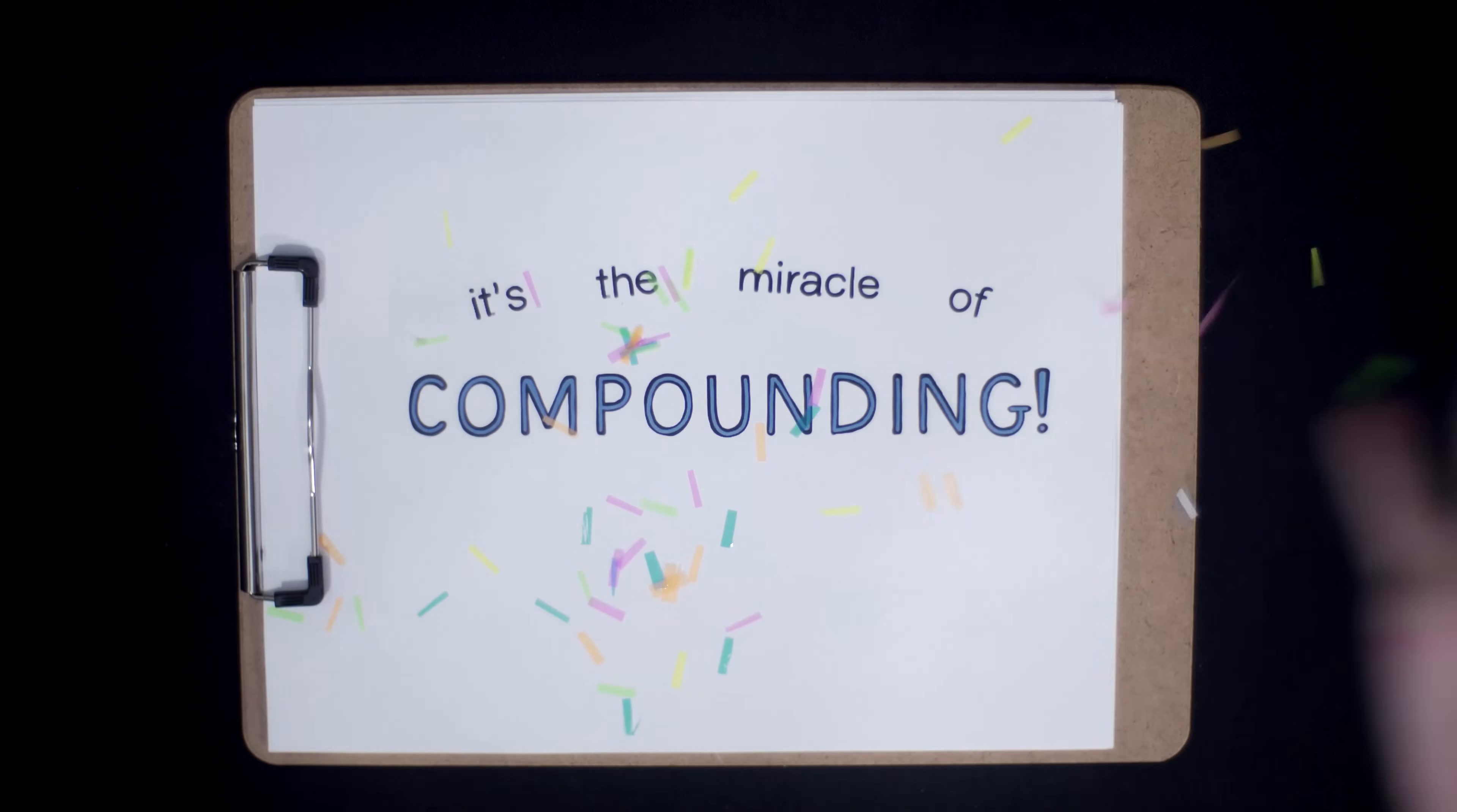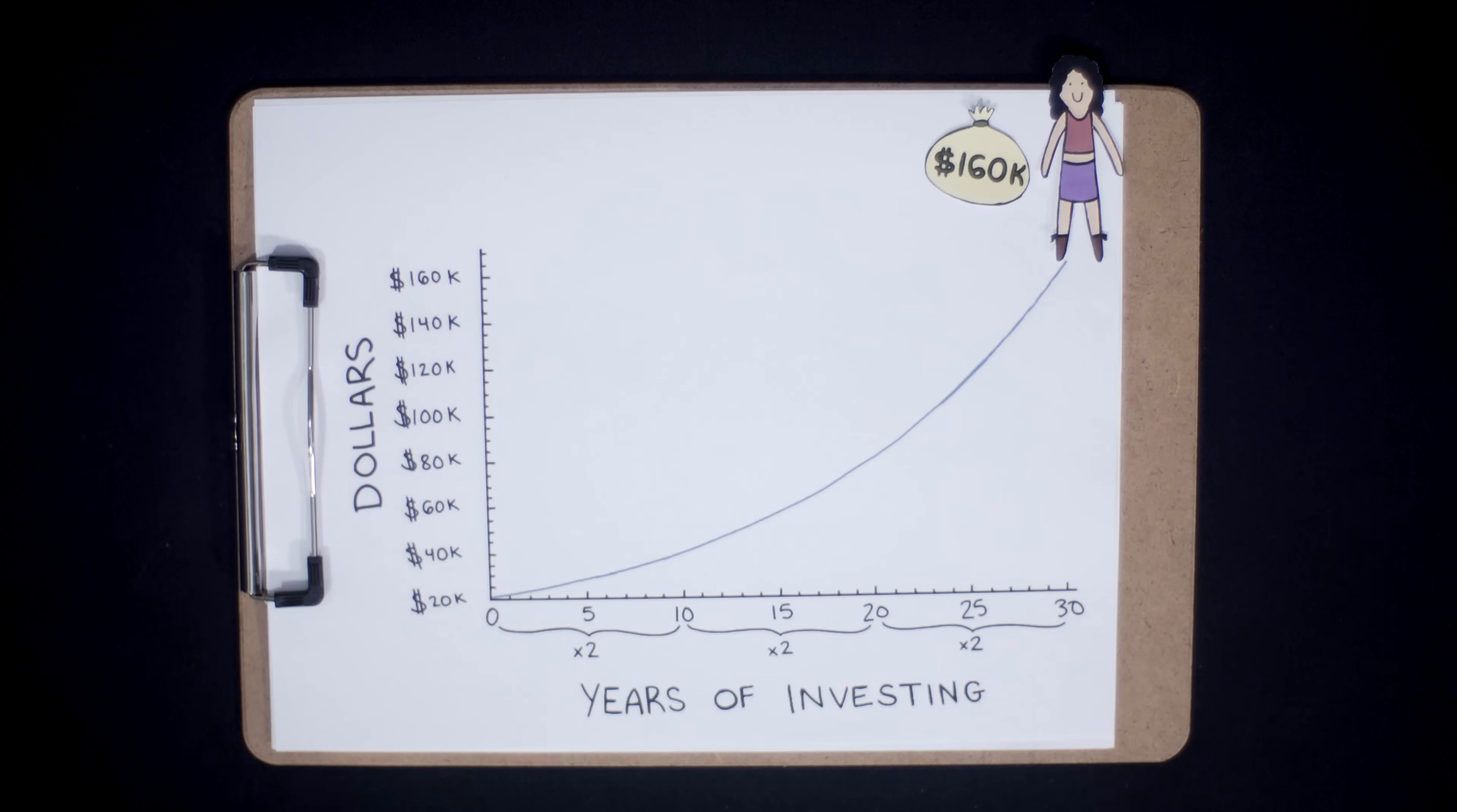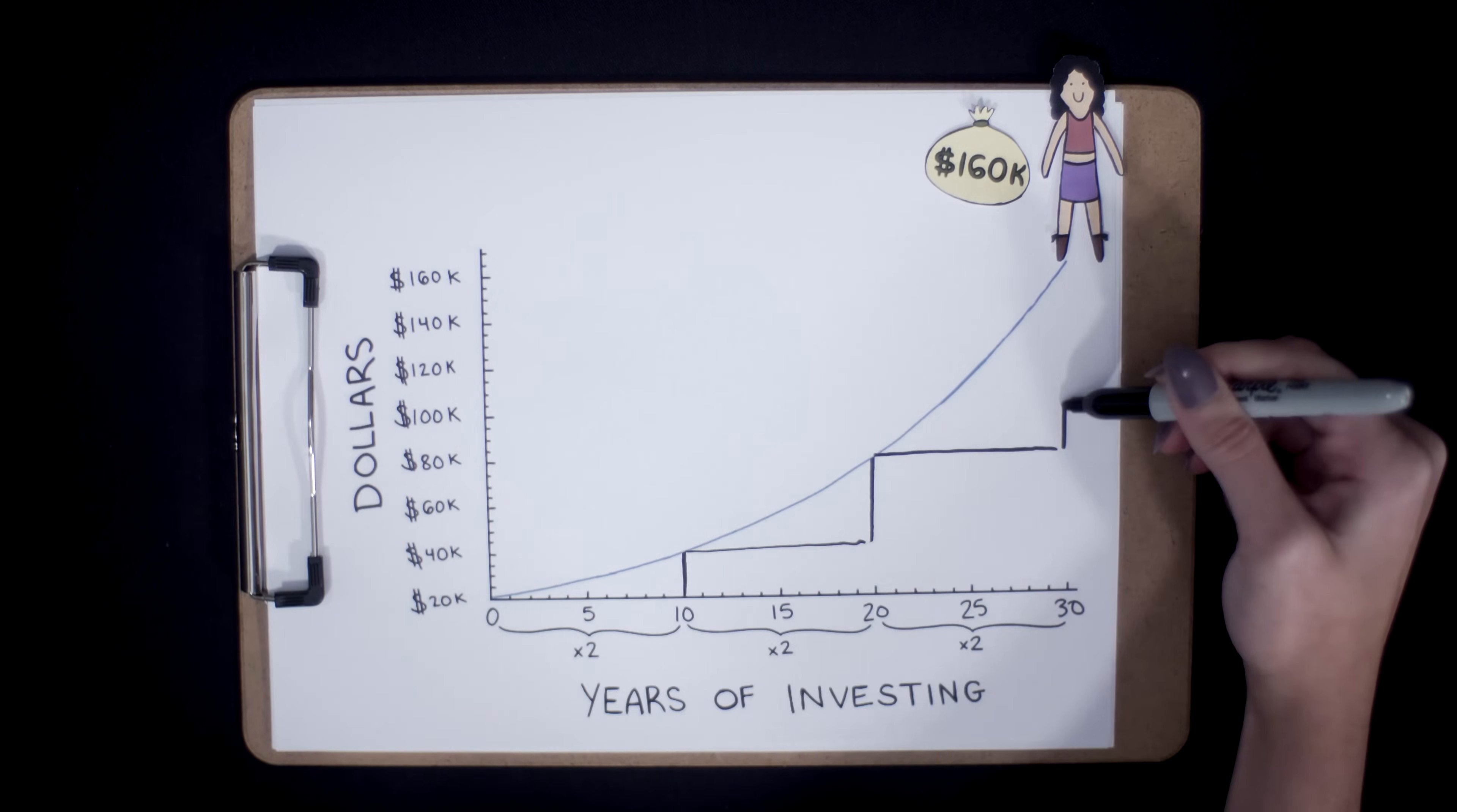It's the miracle of compounding! Meticulous Mary started saving earlier, and that means that when her investment reached $80,000, she had one more 10-year period, one more doubling period still to go. And it's that last doubling that is the biggest doubling.